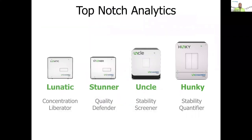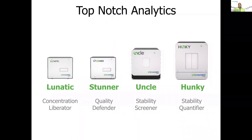What we do at Unchained Labs is put together instruments meant to make that characterization easier. We are focused exclusively on life sciences, which means our instruments don't require a lot of sample. The Lunatic and Stunner measure concentration and size with only two microliters per sample. The UNCLE has three detectors built in and only requires nine microliters per sample. The Hunk gives you the ability to quantify stability in a more specific way. If you have any questions about any of them, feel free to reach out to the team and we'll assist you through your local contacts.